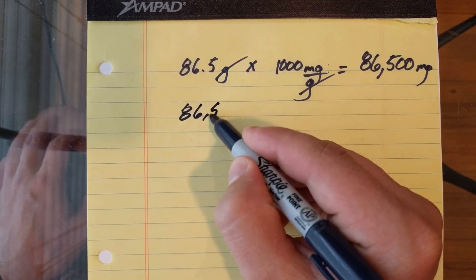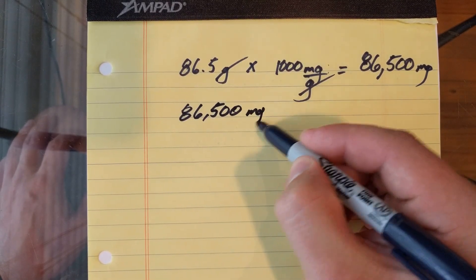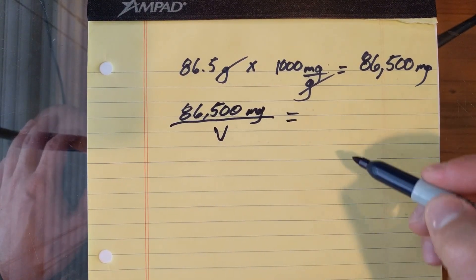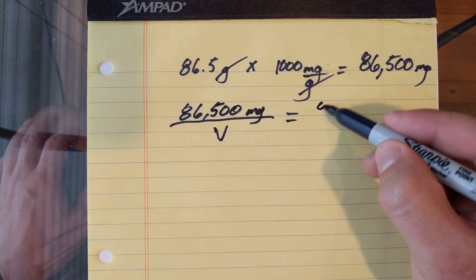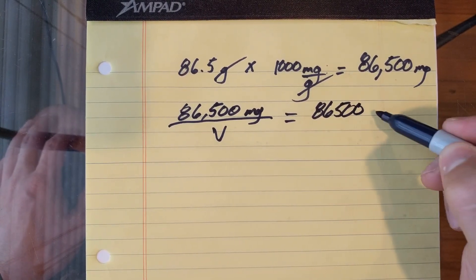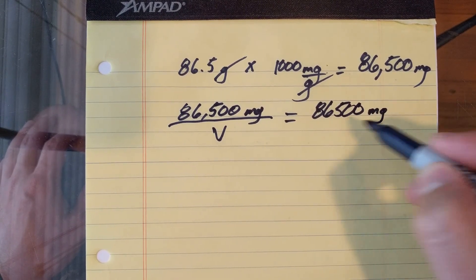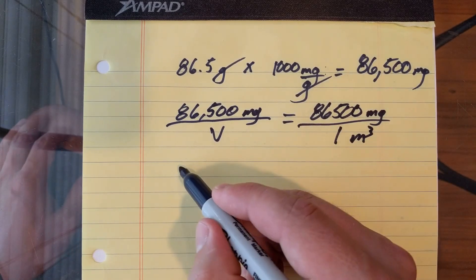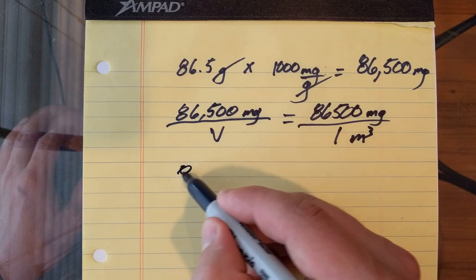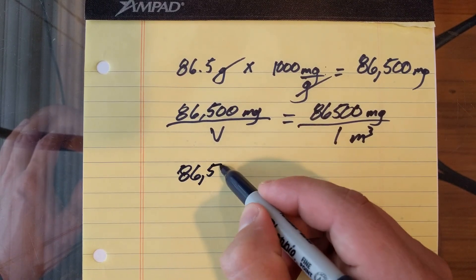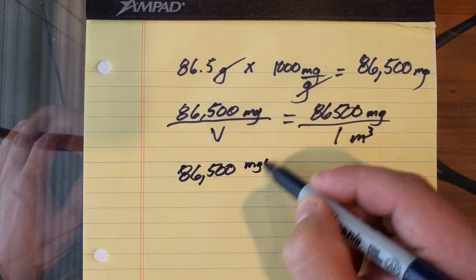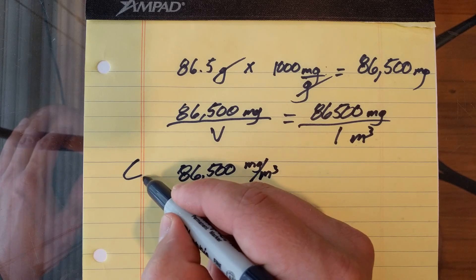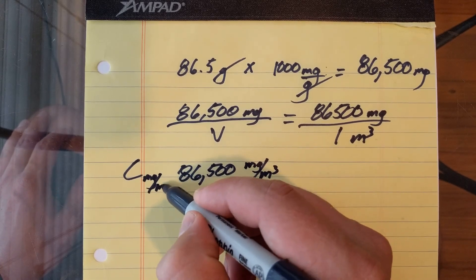So if it was, we'll just assume that the volume is not one, 86,500 milligrams, and then you're going to divide by whatever the volume was. In this case, volume is one meter cubed, so it doesn't really change anything. So the one just goes away. So we've got 86,500 milligrams per meter cubed. And that's going to give us our concentration in milligrams per meter cubed.